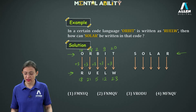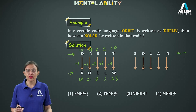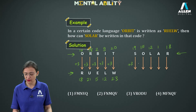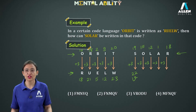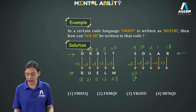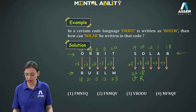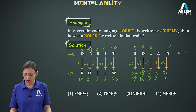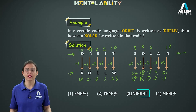We apply the same +3 pattern to SOLAR. Position values: S=19, O=15, L=12, A=1, R=18. Adding 3: 19+3=22 which is V, 15+3=18 which is R, 12+3=15 which is O, 1+3=4 which is D, 18+3=21 which is U. So the required code is V, R, O, D, U and the third option is correct.